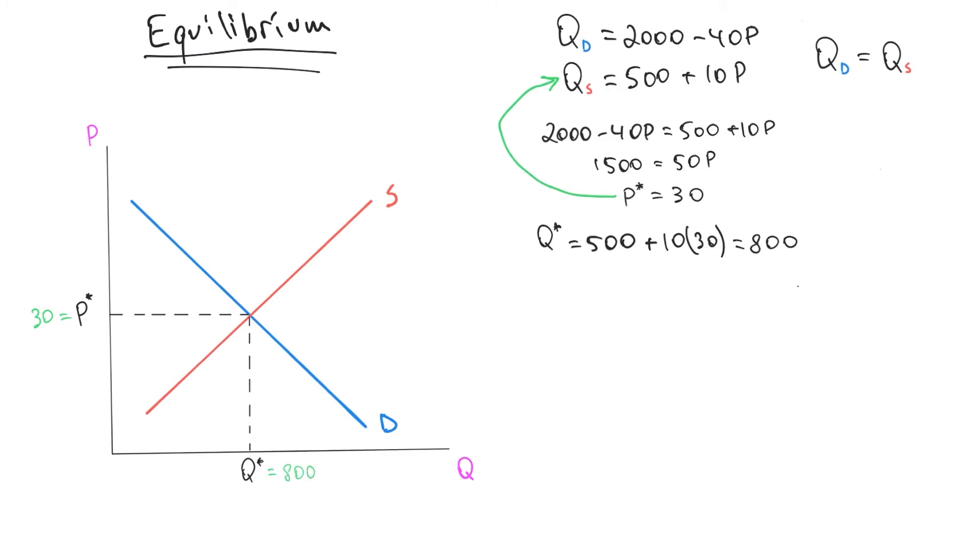What does this mean? This means that in this economy, with these two quantity equations, we know that the optimal price and the optimal production quantity are $30 and 800 units. That's how much people will want to pay and that's how much companies will want to make.